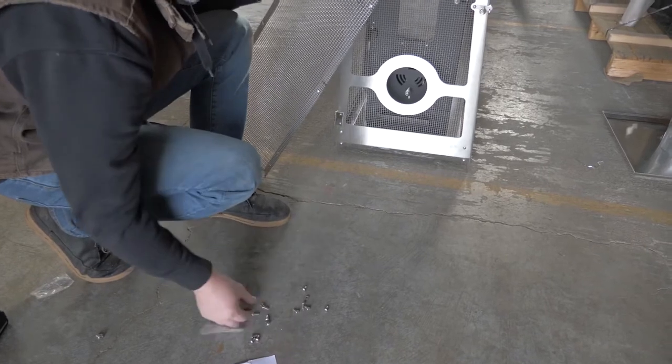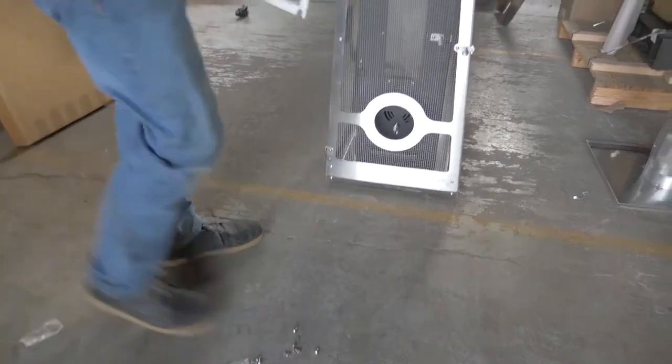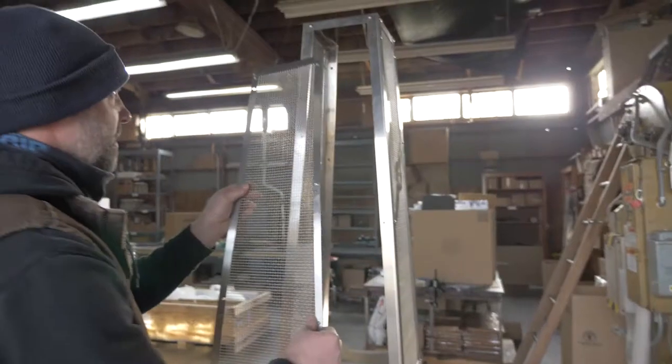Next, install the middle mesh panel to the top portion of the patio heater's Elite Cage.